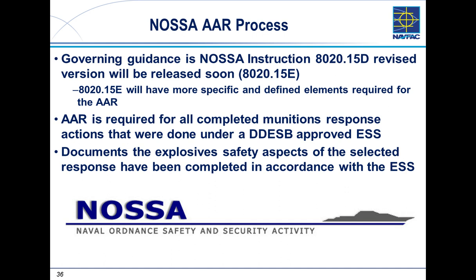The next item under NOSA's purview is the after-action report. The same guidance document, 8020-15, covers this. The after-action report is required for all completed munitions response actions done under a DDSB-approved ESS. It documents the explosive safety aspects of the selected response and lays out how you conducted the work and met the requirements of the ESS. The after-action report basically takes everything related to the action described in your ESS and wraps it all up — how you did it, what the outcome was — in one concise document.